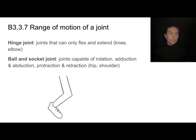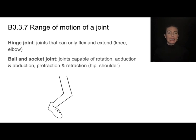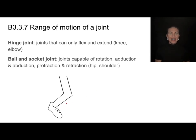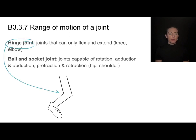Let's talk about a couple different types of joints. One is called a hinge joint. This is a joint that's very stable but has a relatively limited range of motion — like your elbow or your knee. The knee can either extend or flex, but it can only go in that one direction. So it's very stable but limited in its range of motion.